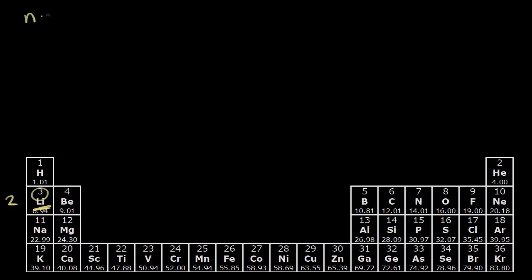We talked about this in the last video. The first shell — when n is equal to one, the only possible value for l is zero. So we're talking about an s orbital, and there's only one s orbital in the first shell. So I can draw that orbital in. Lithium has three electrons, and the first two go into this one s orbital. We pair up our spins like that.